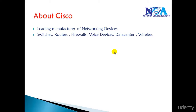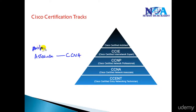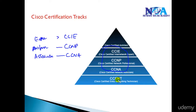Since we are doing a CCNA course, we'll get a basic overview of Cisco. Cisco is a manufacturer of all these devices and provides different certification tracks for different levels. Cisco majorly divides into three certification levels: the first is Associate level, which we call CCNA — Cisco Certified Network Associate; then Professional level, called CCNP — Cisco Certified Network Professional; and Expert level, called CCIE — Cisco Certified Internetwork Expert.